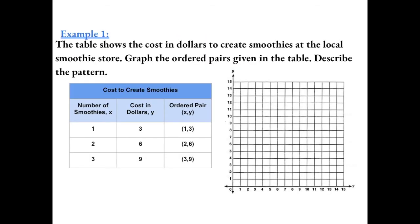Example 1: The table shows the cost in dollars to create smoothies at the local smoothie store. Graph the ordered pairs given in the table and describe the pattern. Our first ordered pair is (1, 3). We start at the origin, go 1 to the right and up 3.